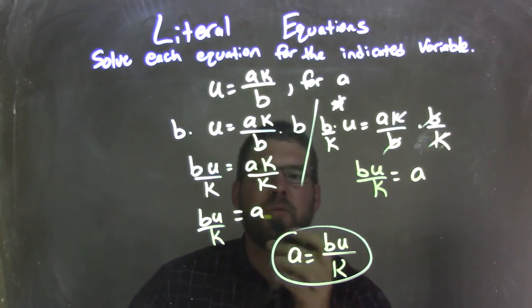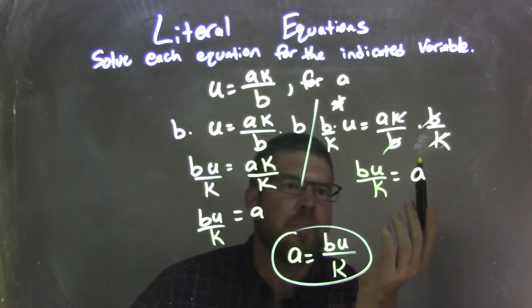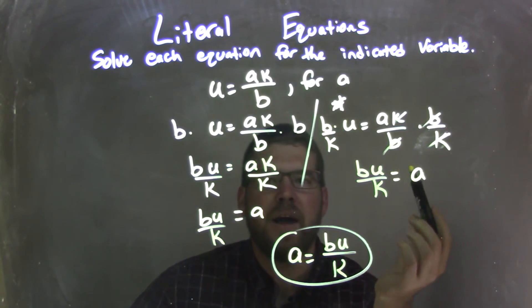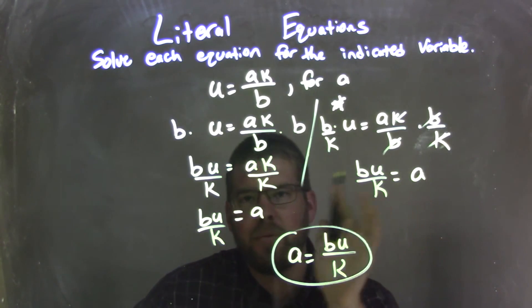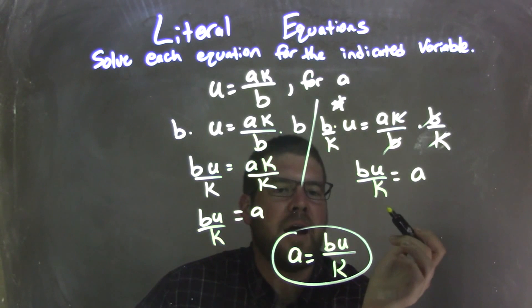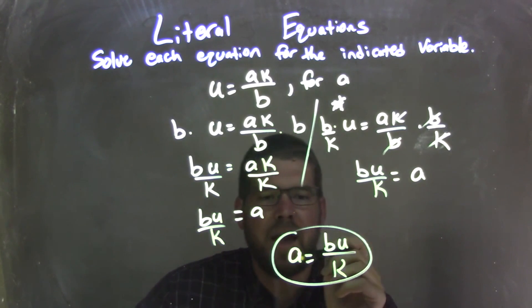And so by doing that fraction, it really is taking these two steps and doing it in one step. And that's up to you on how you want to solve that. Sometimes I'll do it in one step. It really doesn't matter, to me at least. Your teacher might want you to show the two steps. But there we are. So our final answer here, either way, is A equals BU over K, or UB over K. Really doesn't matter.